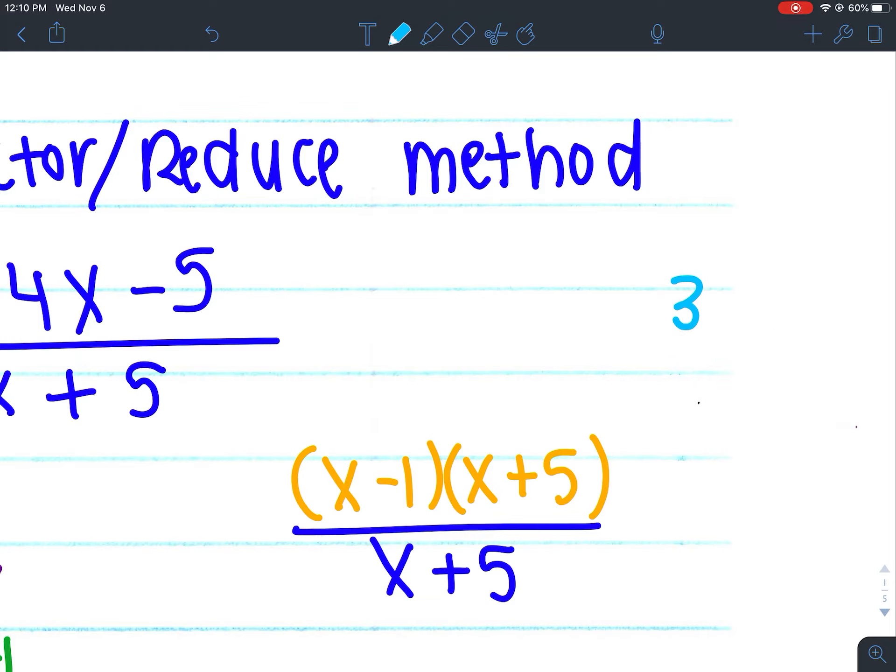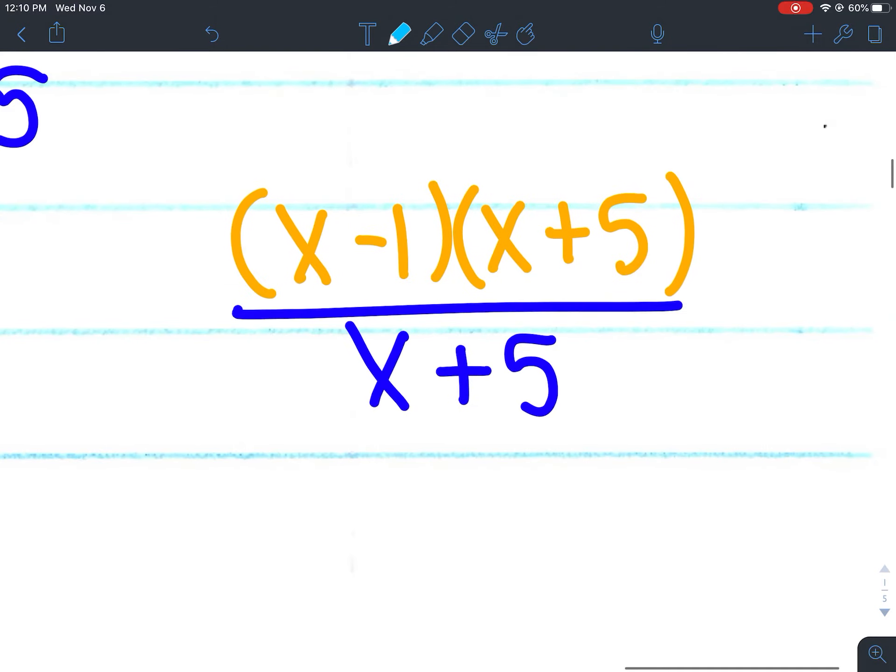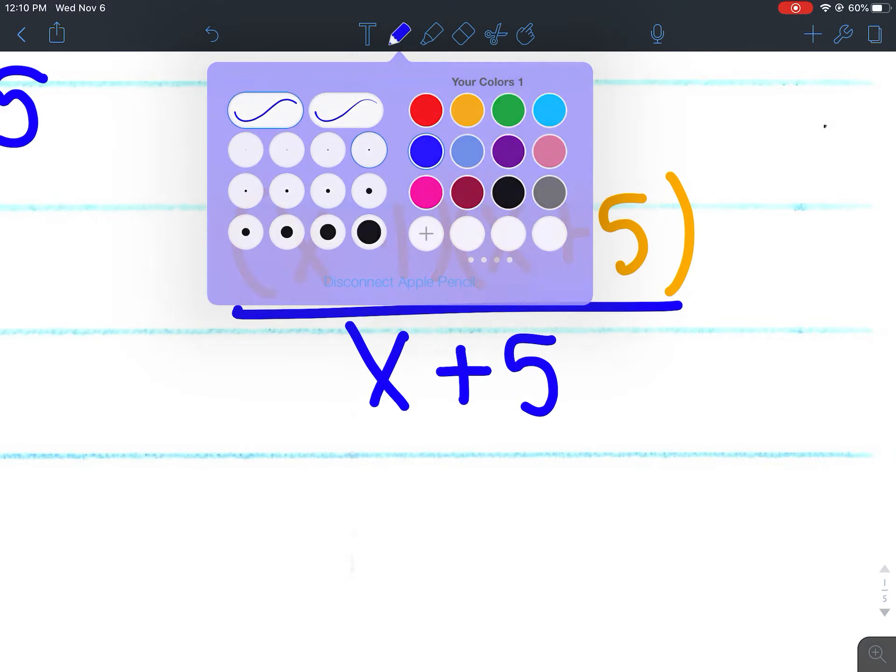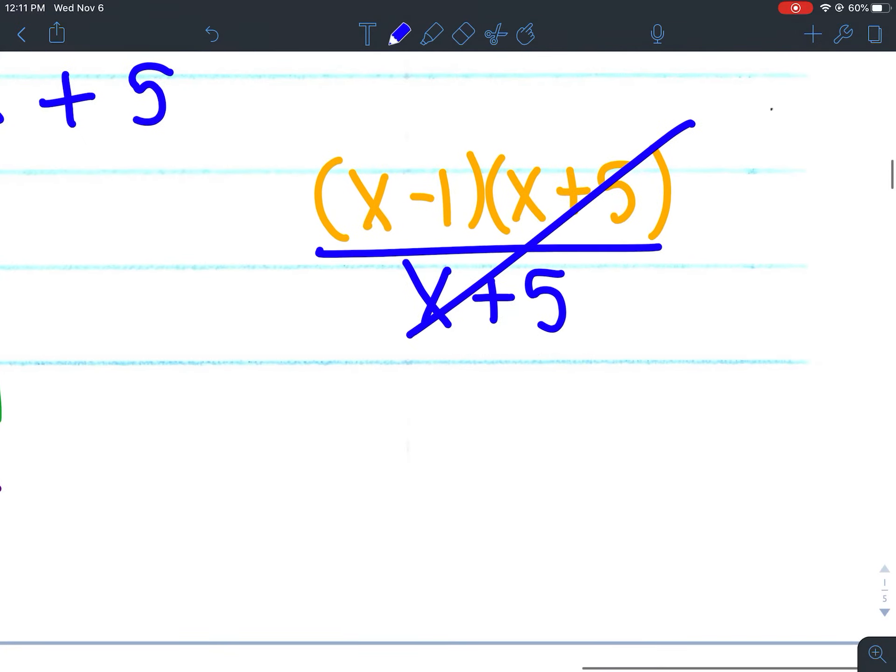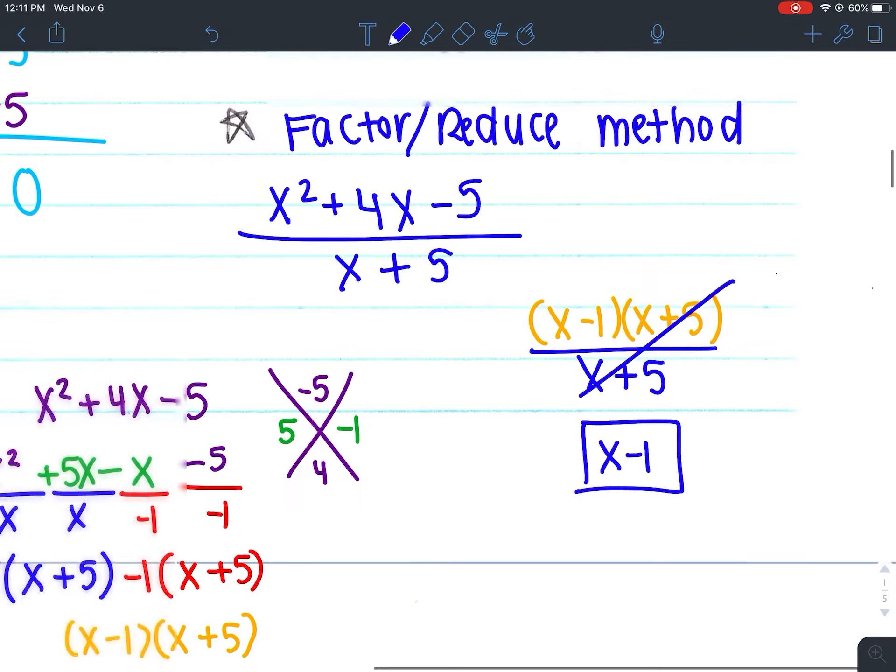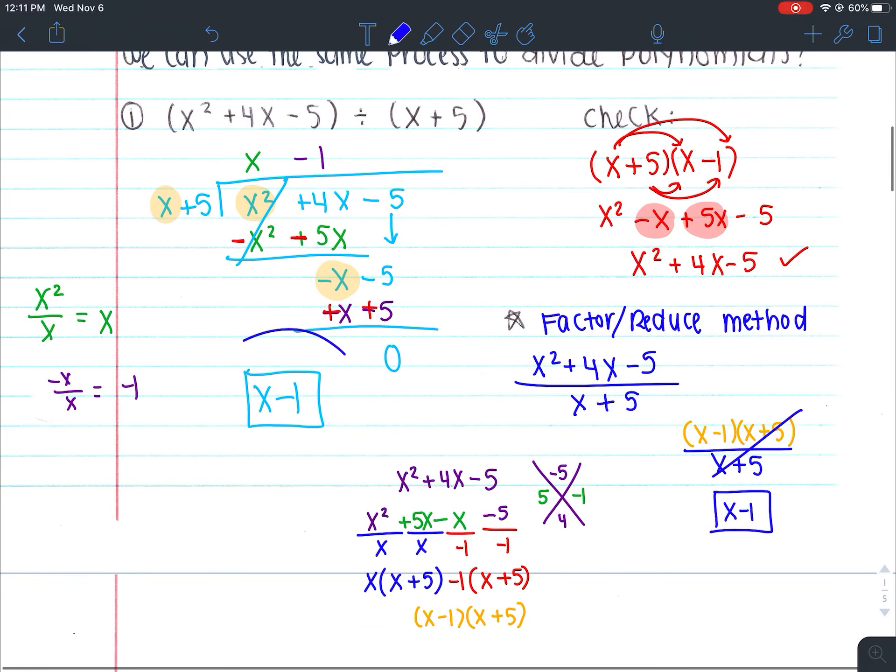So if you have something on the numerator that is the same as something in the denominator, it will cancel out. So here, because I have x + 5 in the numerator and x + 5 in the denominator, those will cancel each other out. And my remaining thing that I have left after I've canceled and reduced is x - 1. Well isn't that what I got the very first time I did the long division? Yes, it is. They're the same thing.